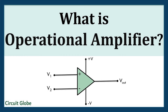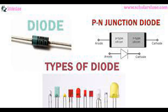Types of ICs: Analog ICs — designed to process continuous signals, such as those in audio amplifiers, voltage regulators, and operational amplifiers. Digital ICs — process discrete signals, working with binary data; examples include microprocessors, memory chips, and digital signal processors. Mixed-signal ICs — combine analog and digital functions, common in applications like data converters (ADCs, DACs), sensors, and communication devices.